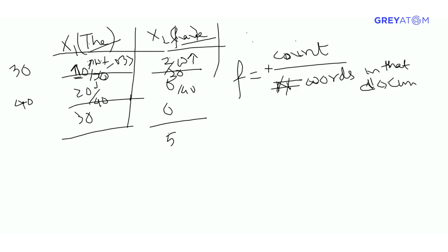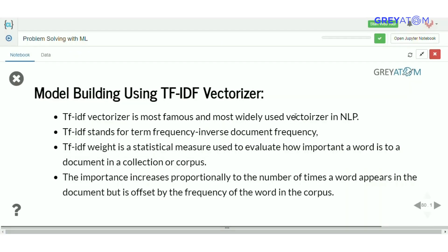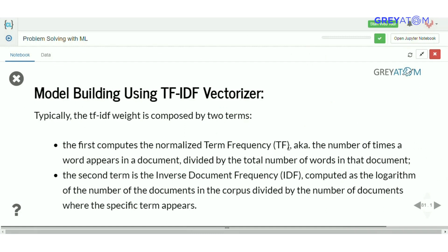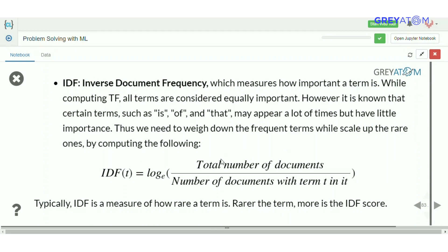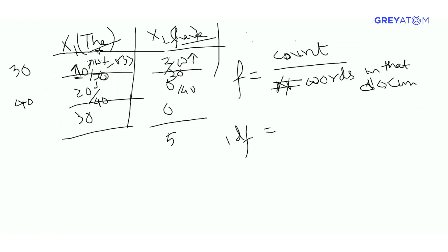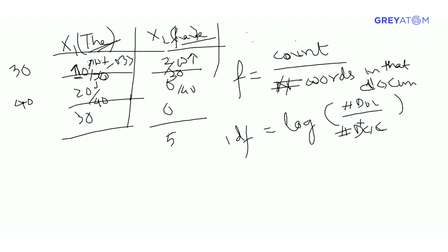Term frequency is count divided by number of words in that document. Inverse document frequency is what penalizes weights based on how many documents a word appears in. IDF is defined as log of (total number of documents) divided by (number of documents containing term t). So for each term, you compute log(N / df_t), where df_t is the number of documents that contain that term at least once.